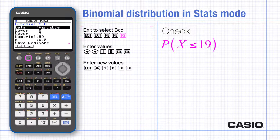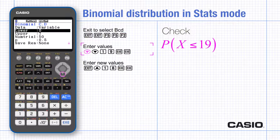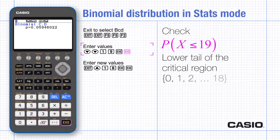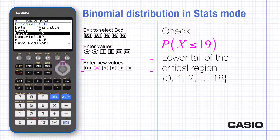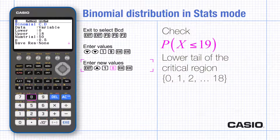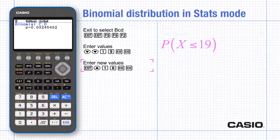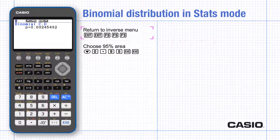Calculate and then record the probability that X is less than or equal to 19. Repeat this for 18 and notice this is on the other side of 5%. Remember to record both of these probabilities as evidence that your critical region is the correct one.